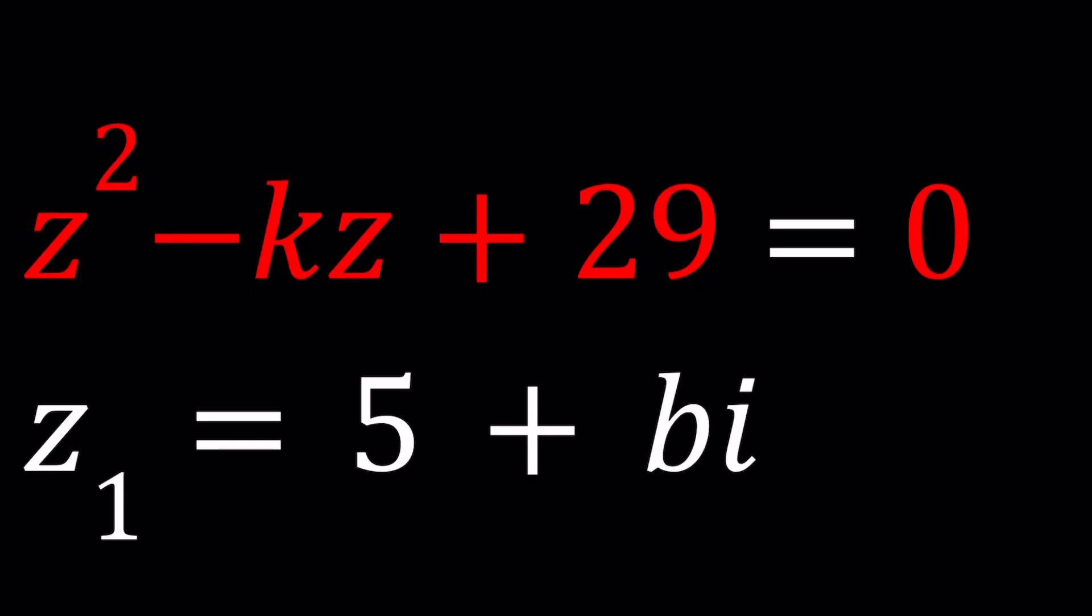Hello everyone, welcome to A plus B I. This channel is all about complex numbers and in this video we're going to be solving a quadratic equation, one of whose roots is given. We have z squared minus kz plus 29 equals 0 and one of the roots of this quadratic equation is 5 plus bi where b is a real number.